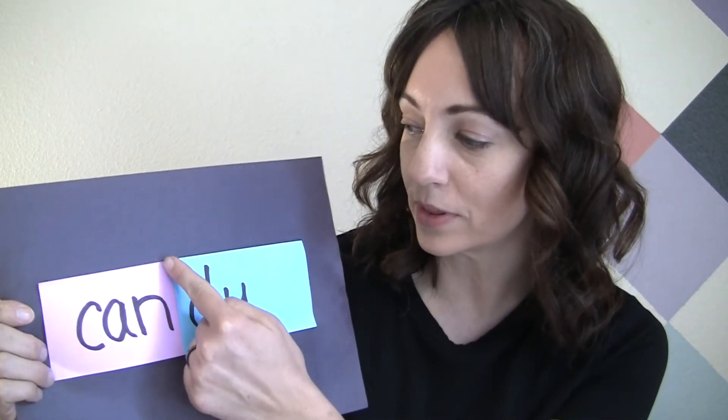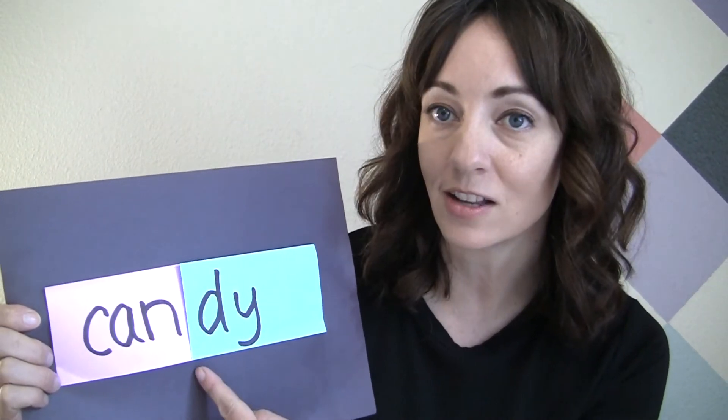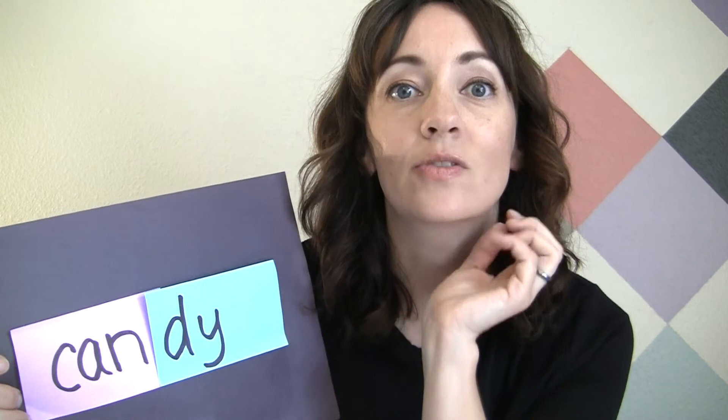In all of the words we're practicing today, we're going to be splitting the syllable between two consonants. It's sometimes a little bit hard to hear when we're splitting it between two consonants. So if you have a hard time, you can put your head on your hands and say the word candy, and you can clearly feel and hear the two syllables in the word.